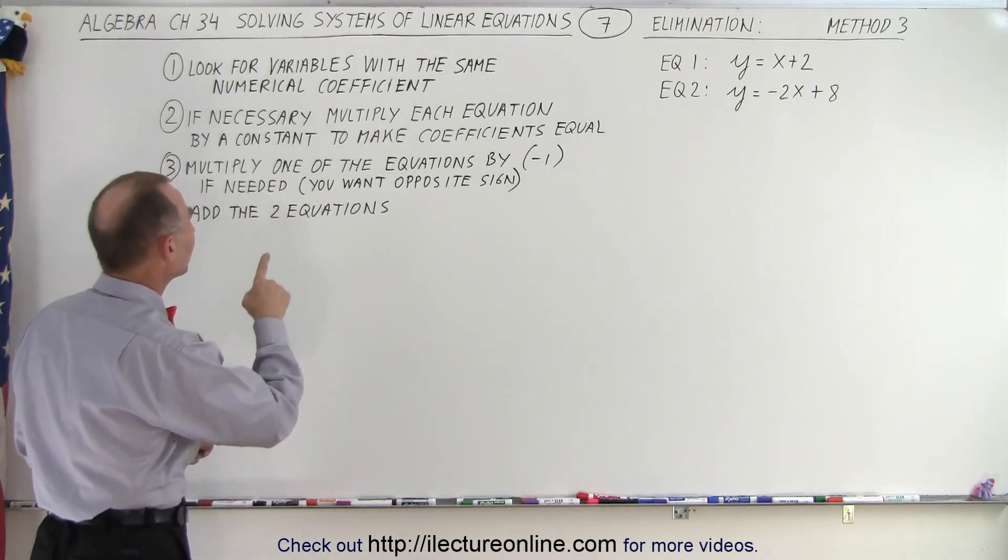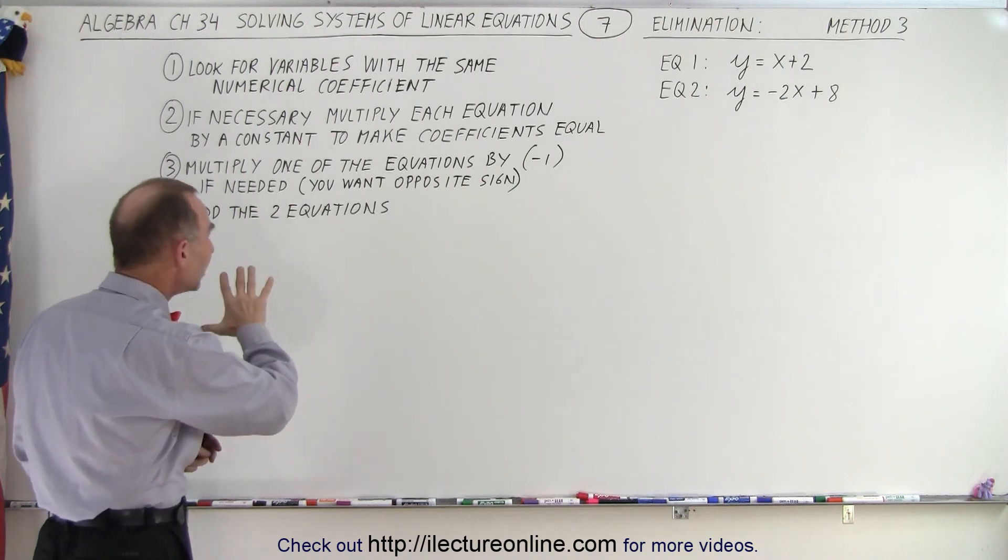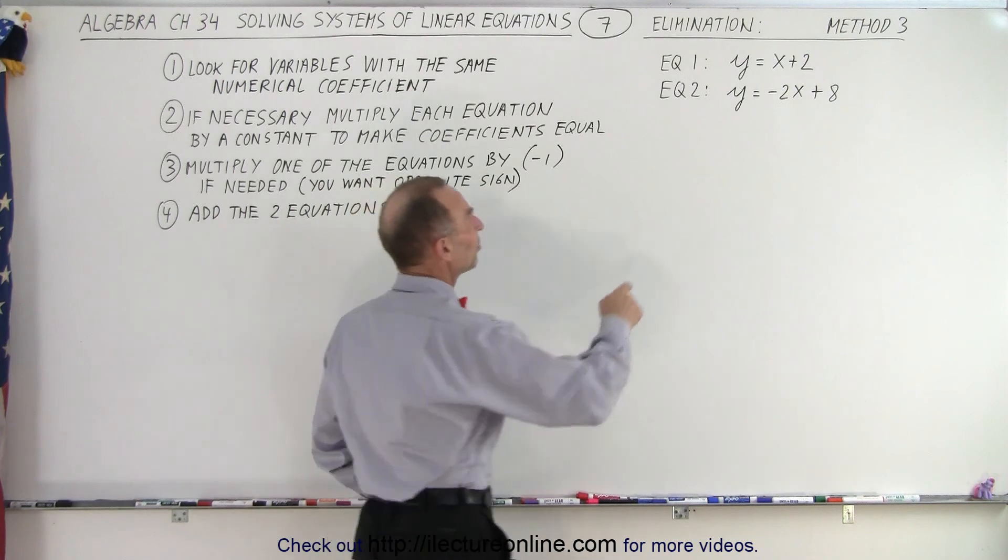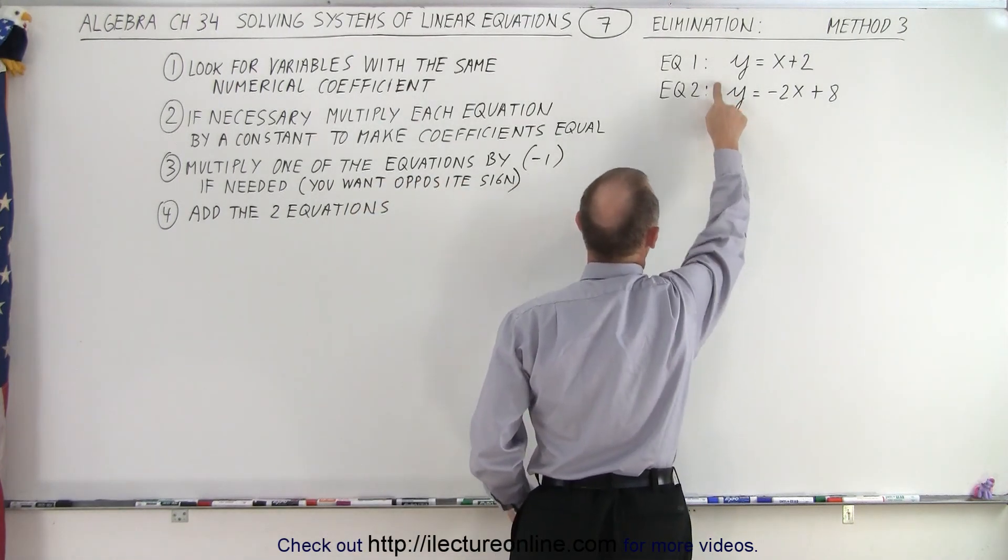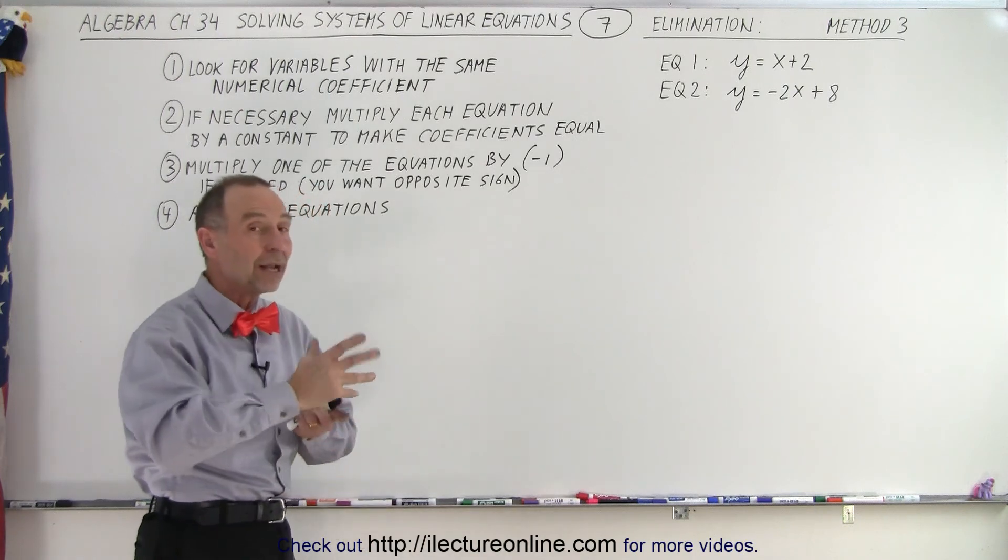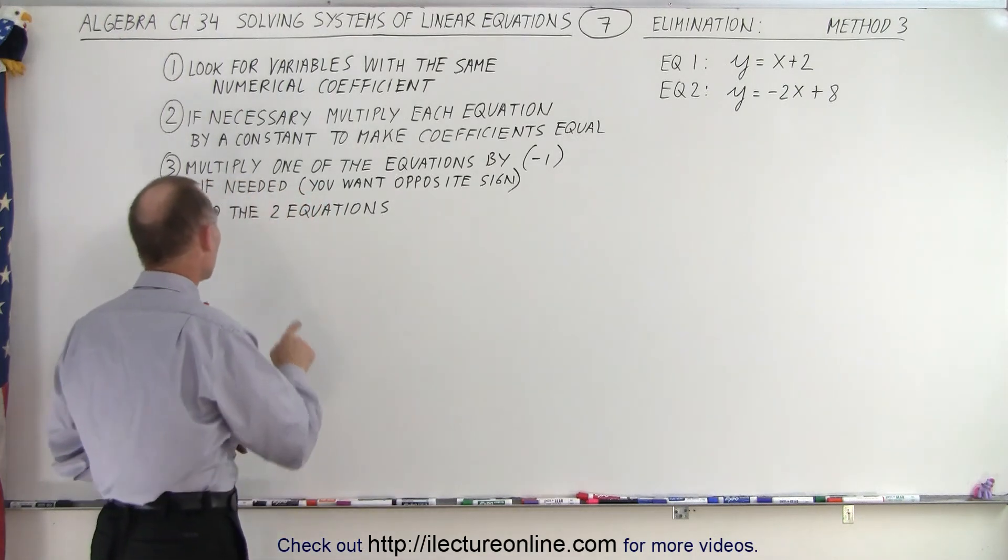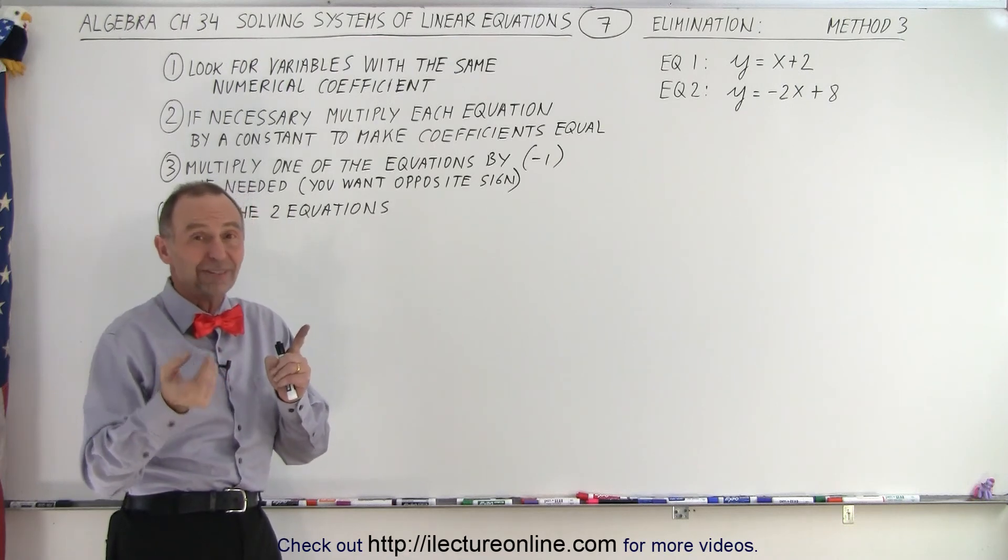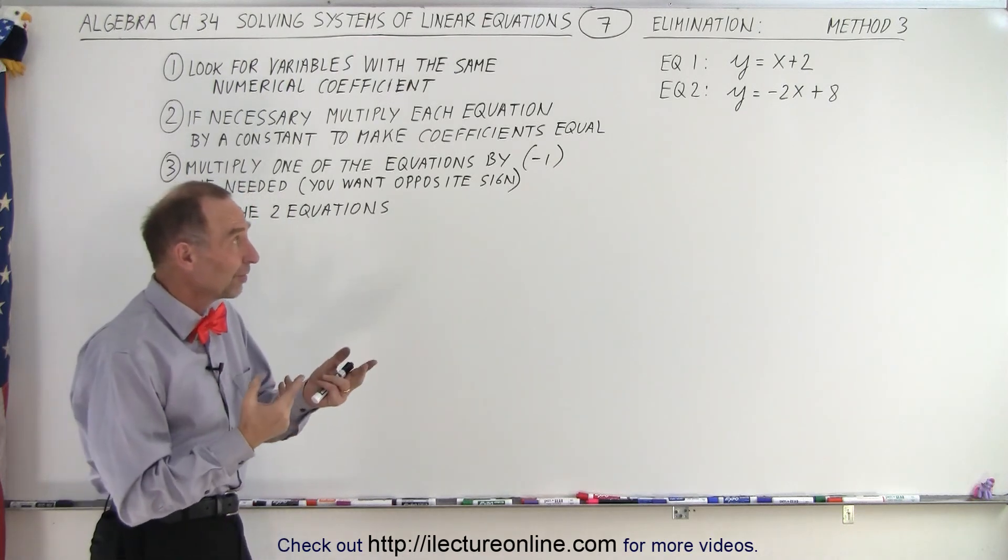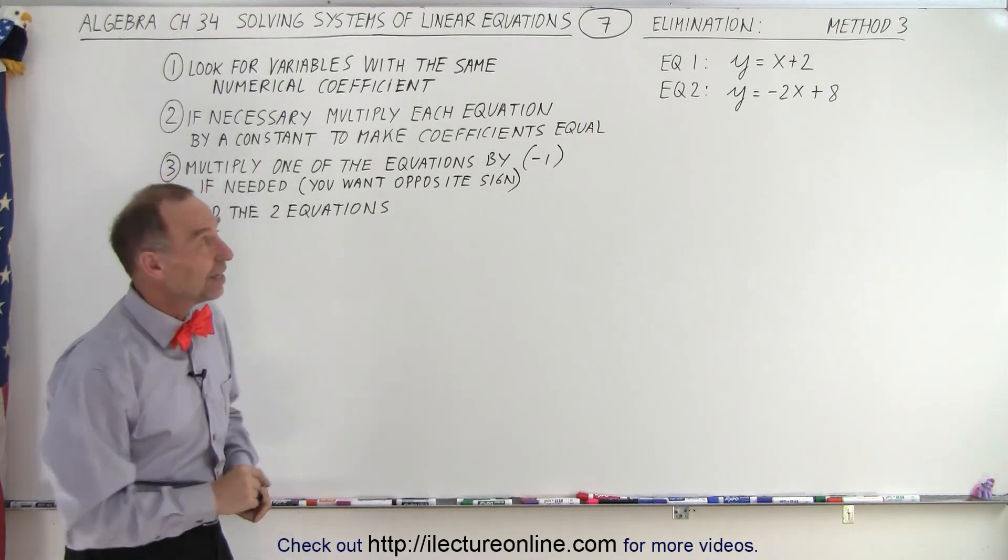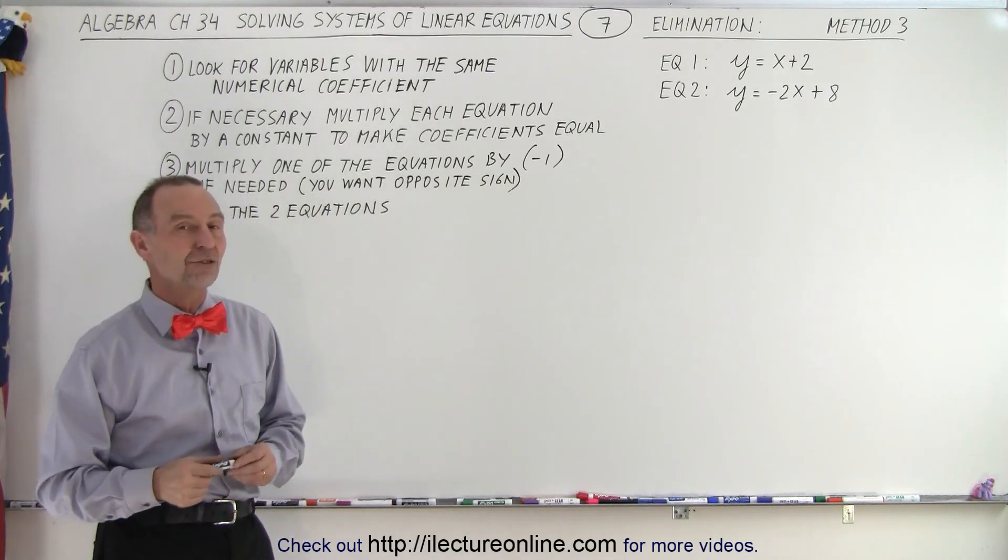Third, we multiply one of the equations by negative 1 if needed, because you want them to be opposite sign. So in this case, since they're the same sign, both positive 1, we want to multiply one equation by negative sign to make it opposite in sign, because then we're going to add the two equations. Since numerically they're the same and one has a negative sign, the other one has a positive sign, when you add them, they're eliminated. And that's the key to the term, the method of elimination.